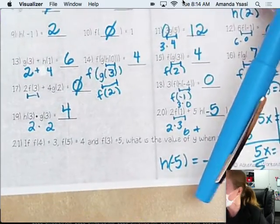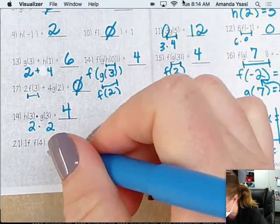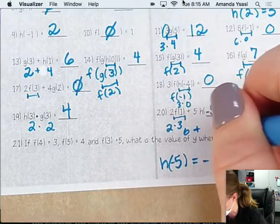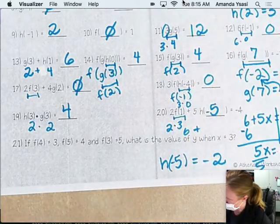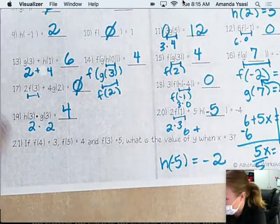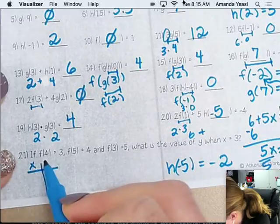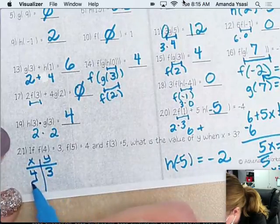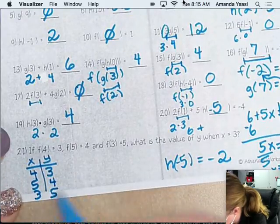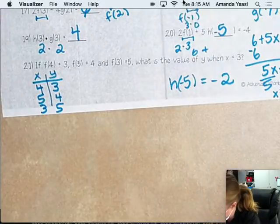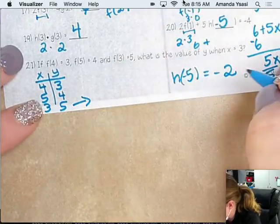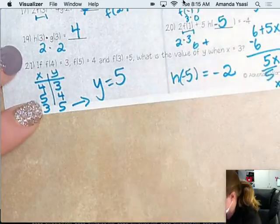Okay. Number 21. If f(4) = 3, f(5) = 4, f(3) = 5, what is the value of y when x equals 3? Does it tell us? Can we just write out a table? So it'd be like 4, 3; 5, 4; 3, 5. You like that? And then so what is the value of y when x equals 3? Yeah. It's just 5. It seems like it's trying to trick us. But it's not really.